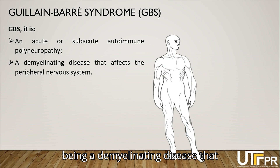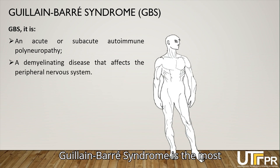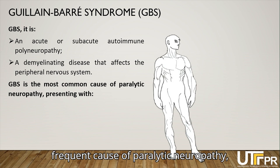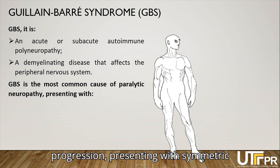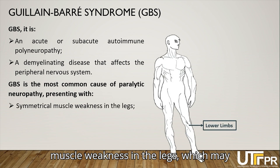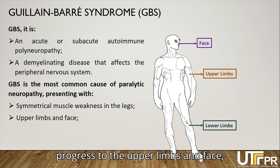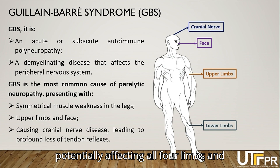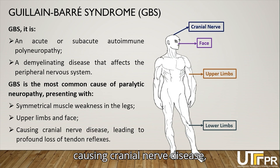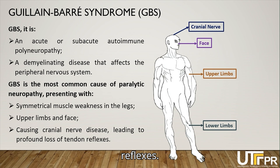Guillabar Syndrome is an acute or subacute autoimmune polyneuropathy and its variants or subgroups, being a demyelinating disease that affects the peripheral nervous system. It is the most frequent cause of paralytic neuropathy, characterized by acute onset with rapid progression, presenting with symmetric muscle weakness in the legs, which may progress to the upper limbs and face, potentially affecting all four limbs and causing cranial nerve disease, leading to profound loss of tendon reflexes.